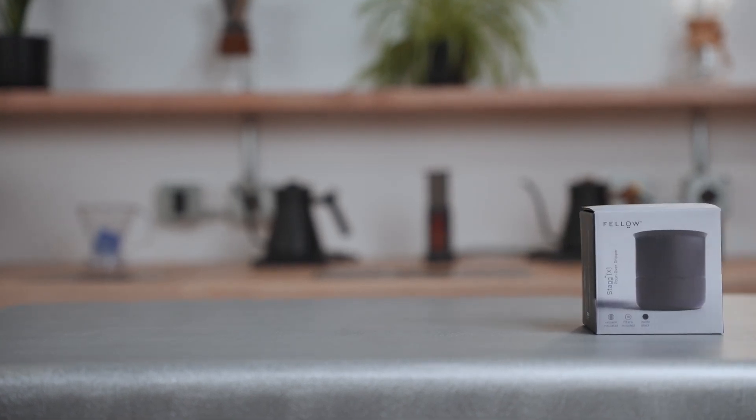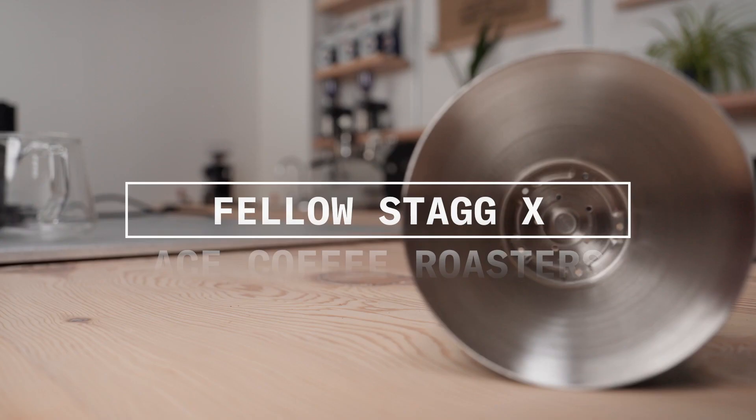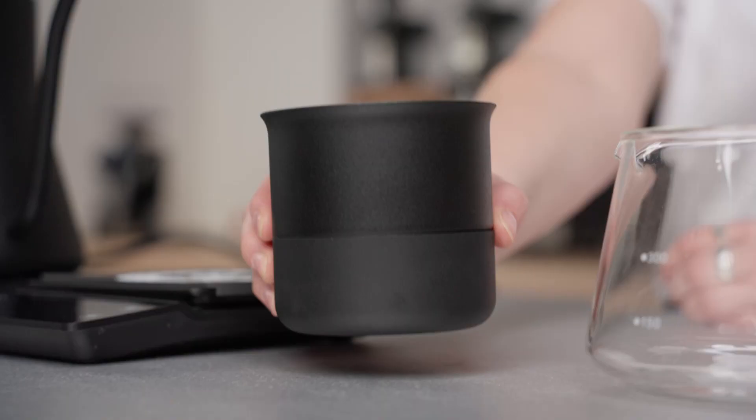The Fellow Stag XF. The Fellow Stag has a shorter height which makes it perfect for methods of a continuous slow pour. Brewing with a Stag X gives you more control over water dispersal and extraction.